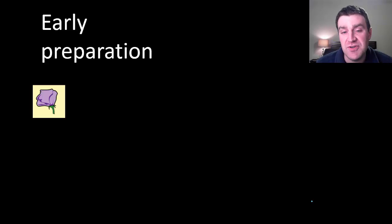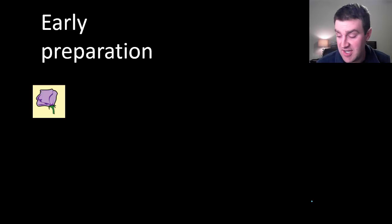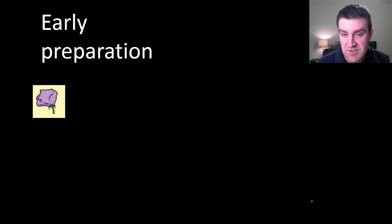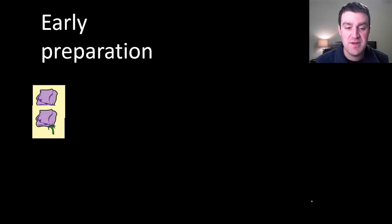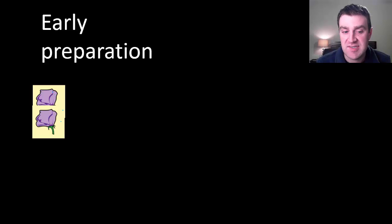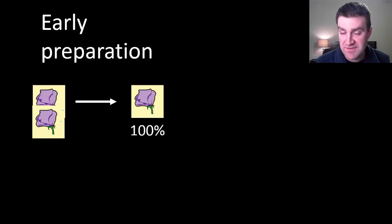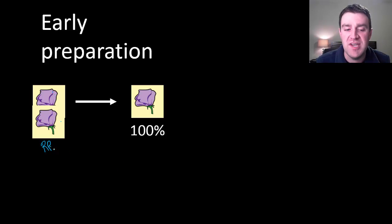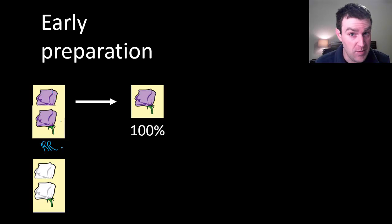Let's talk about some of Mendel's early observations using flower color as an example. There were two types of flowers: purple and white. He found that some of his purple plants were what he called pure breeds. If you self-pollinated a purple flower plant — where it served as both mother and father — 100% of the offspring also had purple flowers. In modern understanding, we'd call them homozygous dominant.